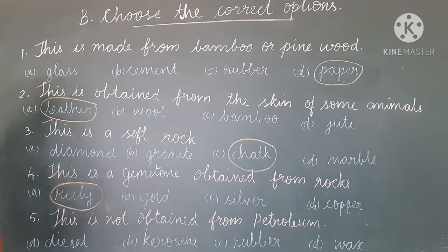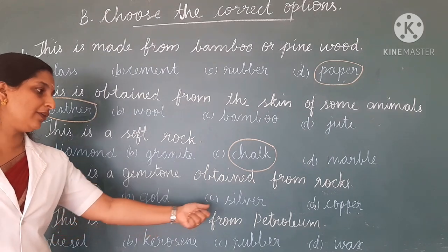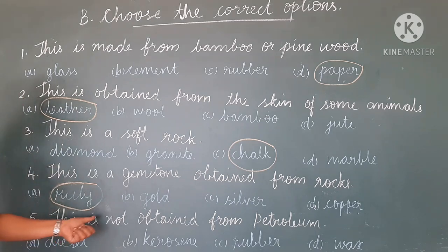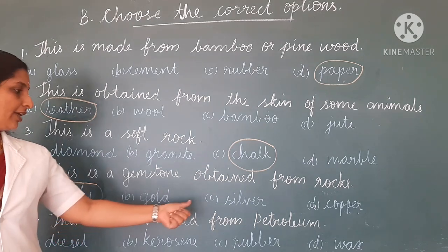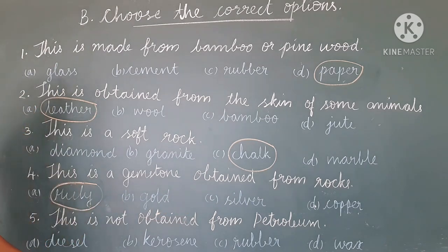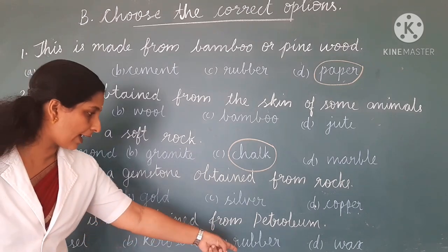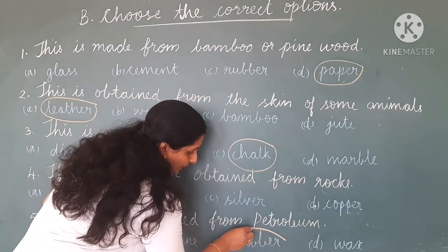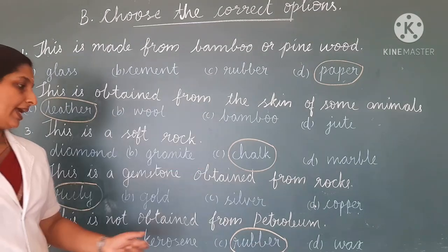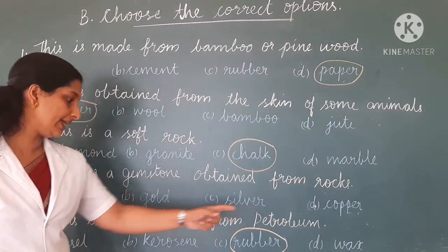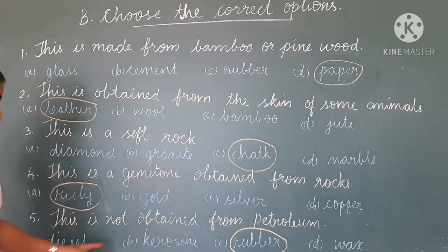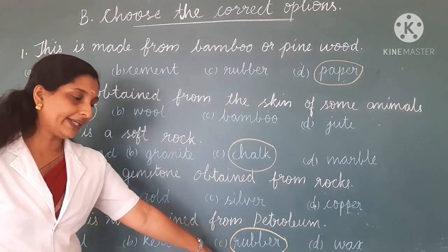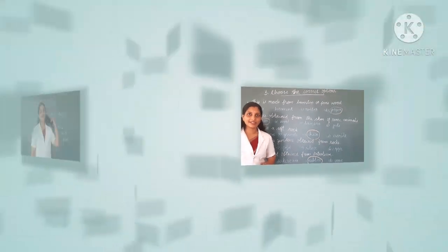Then the fifth question: this is not obtained from petroleum. Your options are diesel, kerosene, rubber and wax. Yes — rubber. Except rubber, we get the other three materials from petroleum. We get rubber from the rubber plant.